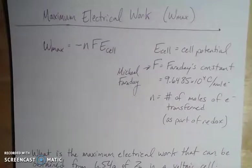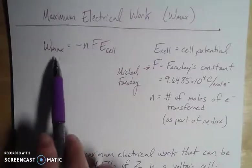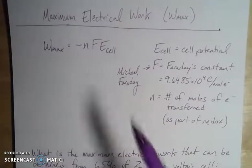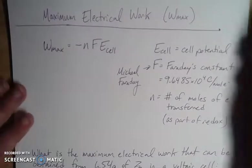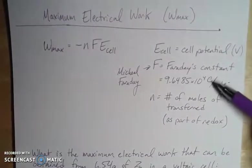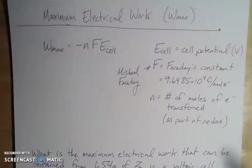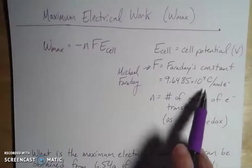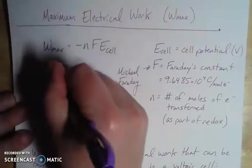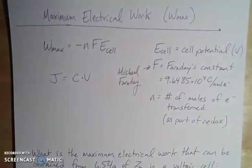And the work then is going to be in joules, because your energy unit here, joules, is equal to a coulomb volt. So if we think about our different units, our cell potential is in volts. Faraday's constant is in coulombs per mole of electron, n is in moles of electrons, so when we multiply them across, the moles of electrons will divide out, and we'll be left with a coulomb volt. And remember that a joule is equal to a coulomb volt. So that will give us a maximum work in joules.